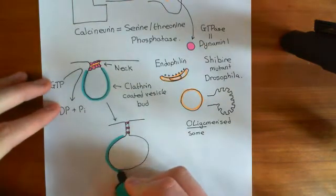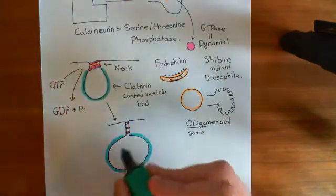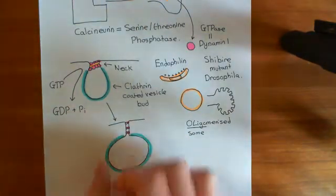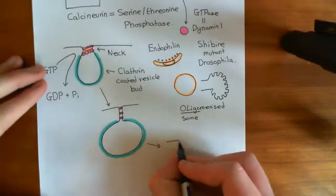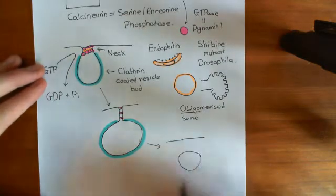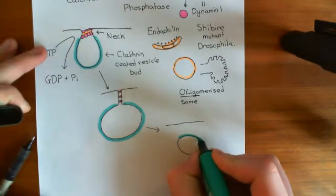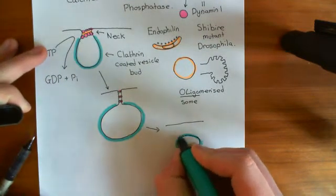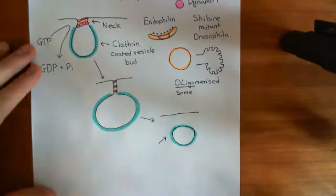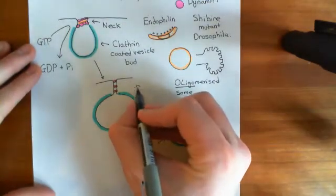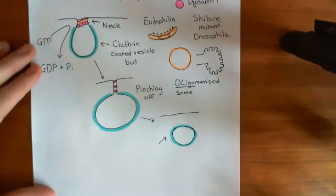What that means is clathrin polymerization can now resume — it can continue on and almost form this buckyball structure. Eventually you're going to pinch off this vesicle. This results in a separate clathrin-coated vesicle, still coated in the buckyball of clathrin triskelions. So endophyllin and dynamin-1, more so dynamin-1, are really important in this pinching-off process where we pinch the clathrin-coated vesicle bud off from the plasma membrane.